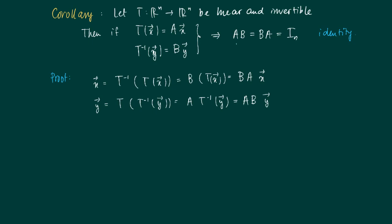So now we have two things: X and Y, which equal identity matrix times X and identity matrix times Y, equals BA times X and AB times Y. So AB equals BA equals I_n.